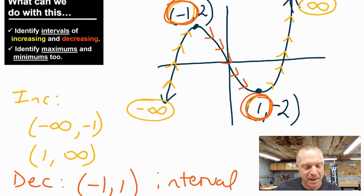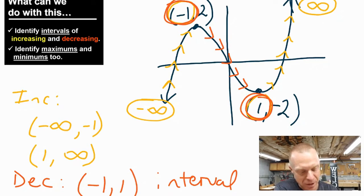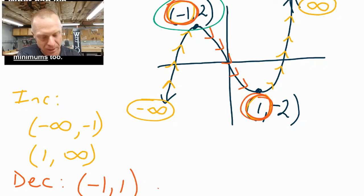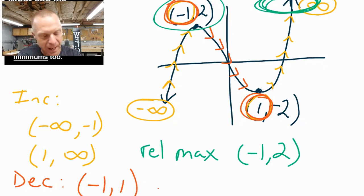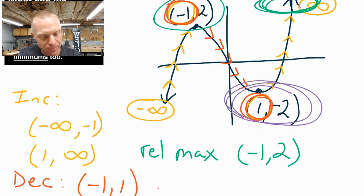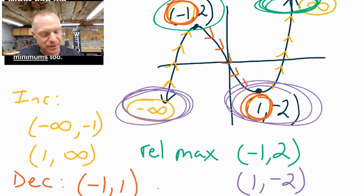What about maximums and minimums? If you look at this graph, it's pretty clear that there's a high point — it is definitely (−1, 2), so we would call that a maximum. But it's not the highest point because the graph keeps going up to infinity, so we would call this a relative maximum. Over here we have a low point at (1, −2), but it's not the lowest point because the graph keeps going down to negative infinity, so we call that a relative minimum.